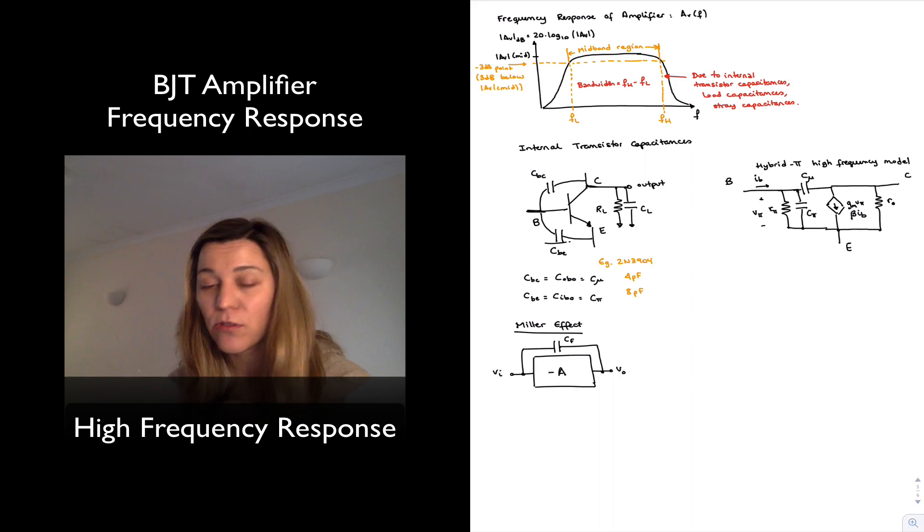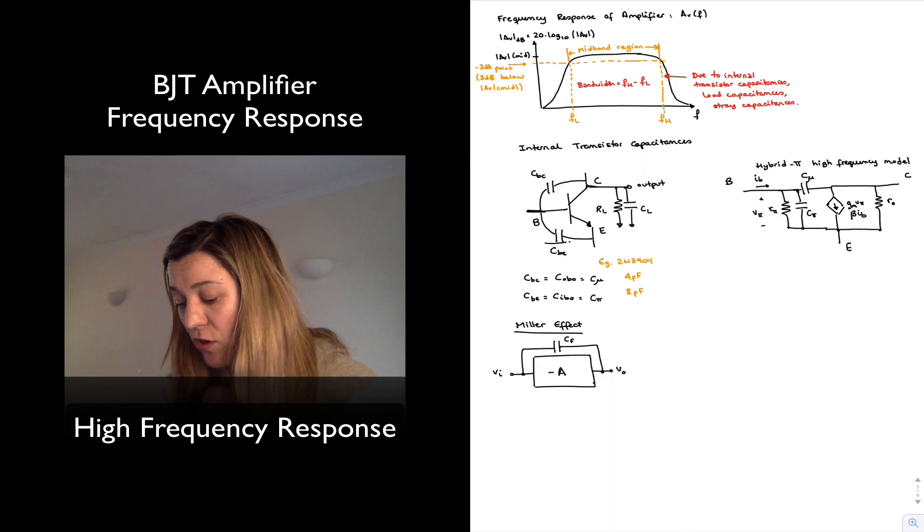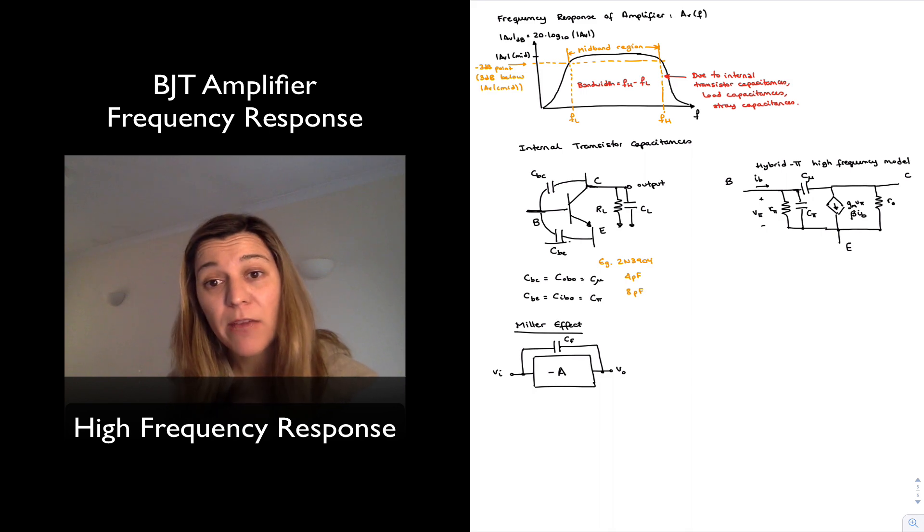Basically, John Miller, who was the first person that published about this effect, discovered that the behavior of this capacitor across the feedback path is as if you had two shunt capacitances, one at the input, one at the output.